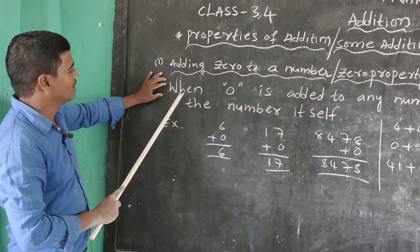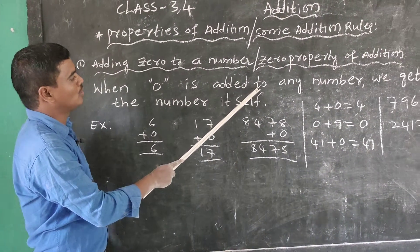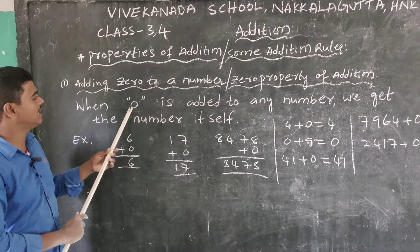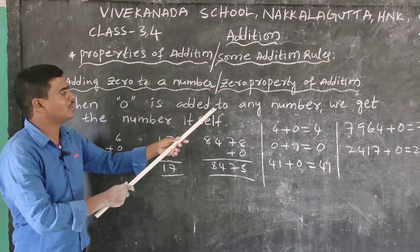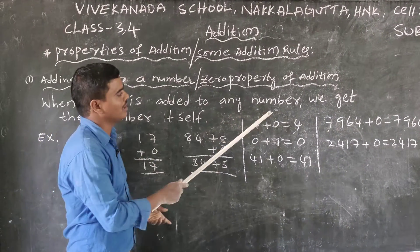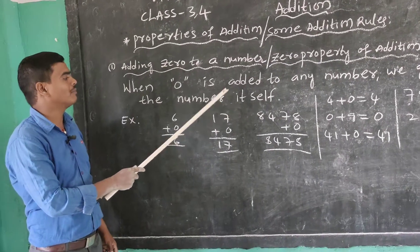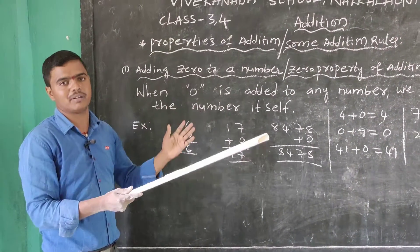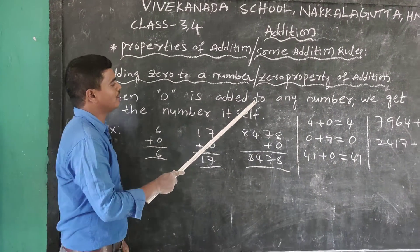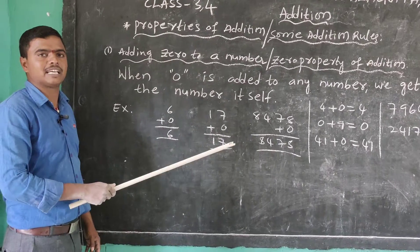When 0 is added to any number, we get the number itself. 'Itself' means the same number. When 0 is added to any number, we get the number itself.